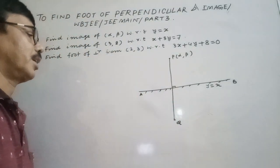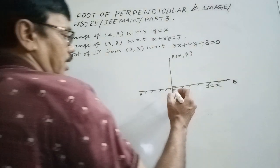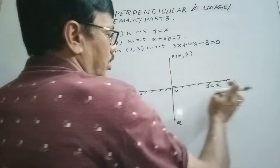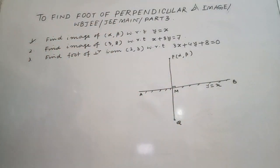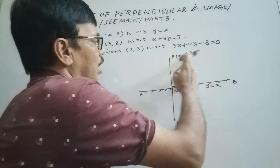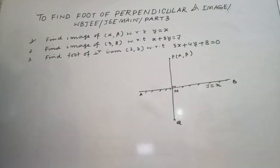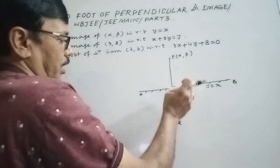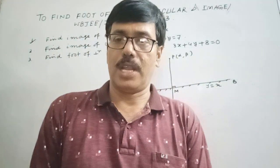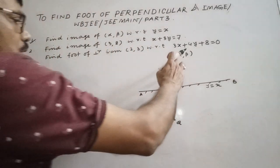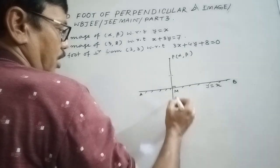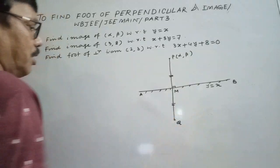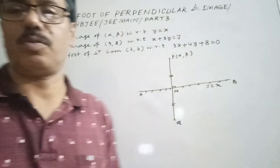So what will be our technique? We first note the equation of AB is given. We then find the equation of PQ. Now PQ is a line passing through (α, β) and perpendicular to y = x. Solving AB and PQ we get the coordinate of M. M is the foot of perpendicular. If Q is the image, then M is the midpoint of PQ. This is our working technique.